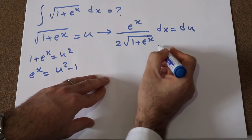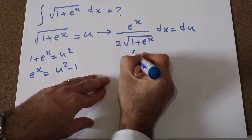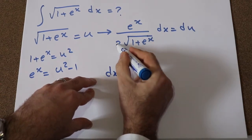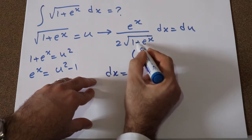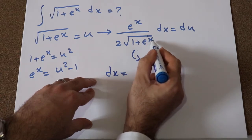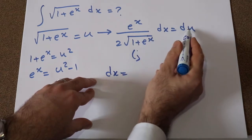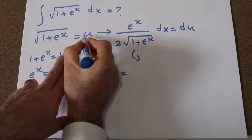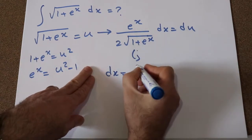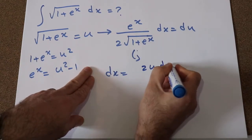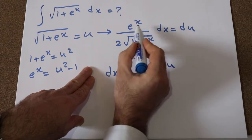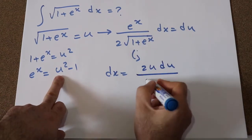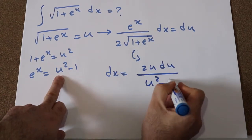Therefore, you can conclude that dx is equal to 2 times √(1 + eˣ) times du. And instead of √(1 + eˣ), I simply write 2u, so that will be 2u du divided by eˣ, and eˣ is equal to u² minus 1.